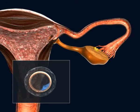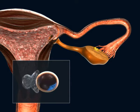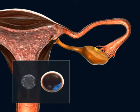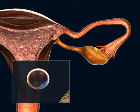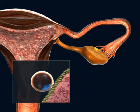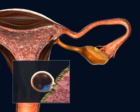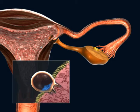The blastocyst migrates to the uterus and sheds the surrounding membrane in a process called hatching, and the embryo begins to implant in the endometrium of the uterus.